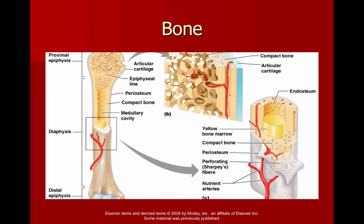Another reason we have spongy bone is to allow blood vessels to go through — a lot of capillaries and blood vessels. Within the spongy bone there are plates or bars called trabeculae, and the spaces in between them have red bone marrow and capillaries.